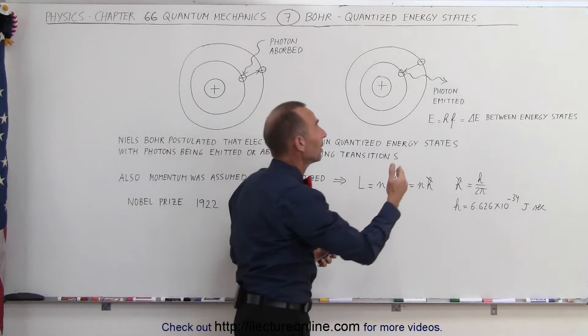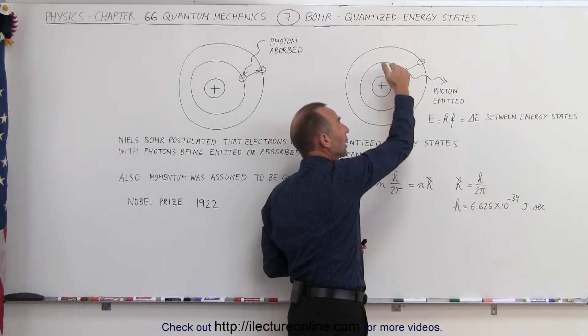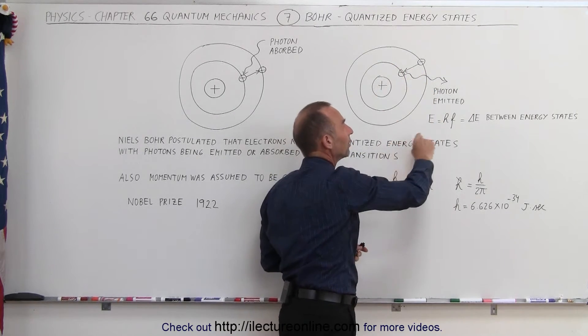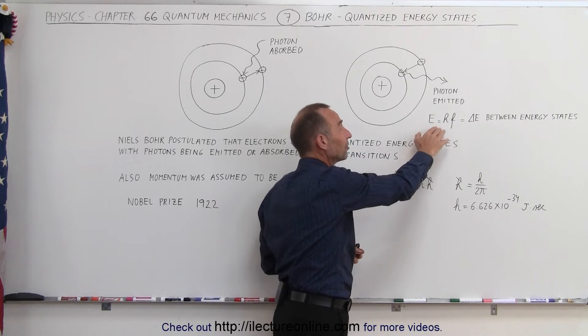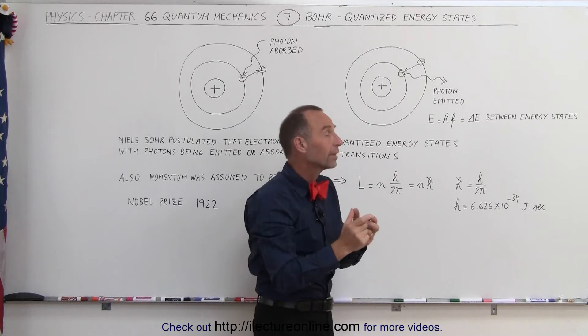Likewise, when an electron would jump from a higher energy state to a lower energy state, it would release the exact energy difference in the form of a photon. Remember that they had discovered through Planck and Einstein that the energy contained within a single photon, which also was quantized,